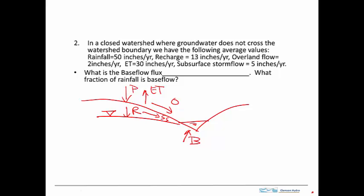And the strategy is to draw a control volume that has the base flow flux crossing the boundary of the control volume and includes some other things. So the easiest way of doing this is to recognize that here's the aquifer and we can draw a control volume on the aquifer. So let's draw it like this.